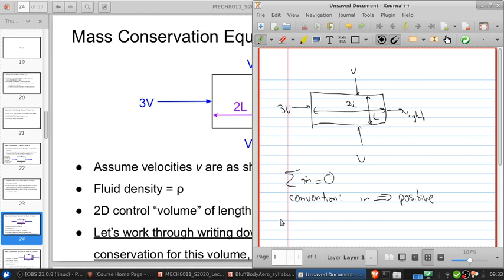We could do it the other way around, it's just a convention, but we have to be explicit. So then, this is the left side, top, bottom, right. Let's go to the left. What's our mass flow? M dot left equals rho L times 3V.